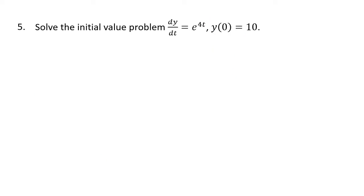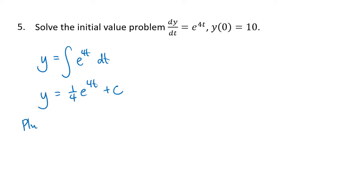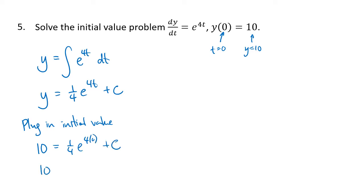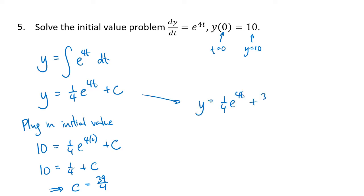Another problem along the same line: dy/dt equals e to the 4t, so y is going to be the antiderivative of e to the 4t with respect to t. We substitute u equals 4t, which gives us 1 fourth e to the 4t plus c. Plugging in the initial value — t equals 0 and y equals 10 — we get 10 equals 1 fourth e to the 0 plus c, which is 10 equals 1 fourth plus c, so c equals 39 over 4. Our solution is 1 fourth e to the 4t plus 39 over 4.